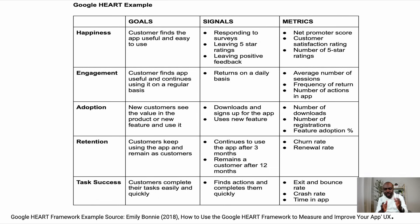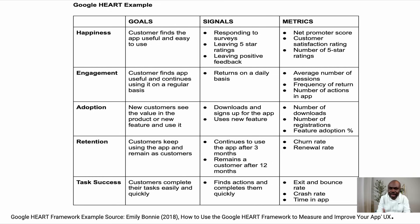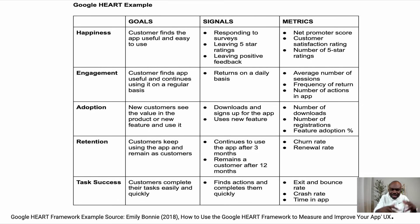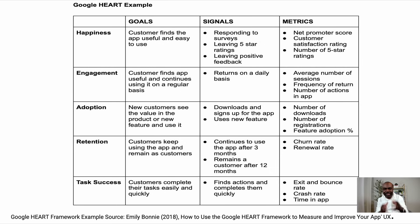For Engagement, the signal is how often customers are using the product. Metrics include average number of sessions, frequency of return visits, and number of actions taken in the app. For Adoption, it's about understanding how many people are adopting your product — metrics like number of downloads, number of registrations, and feature adoption rate. For Retention, you want to know if customers keep coming back. Churn rate is a good metric here — it's the opposite of retention — as is renewal rate.